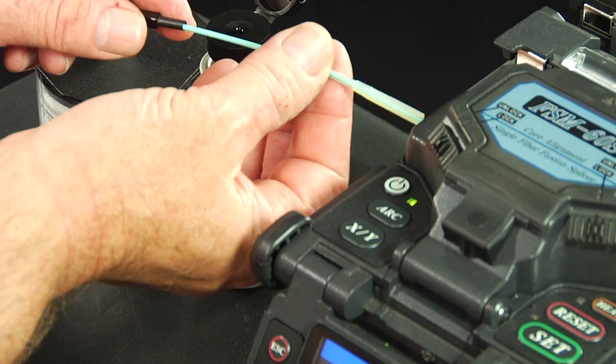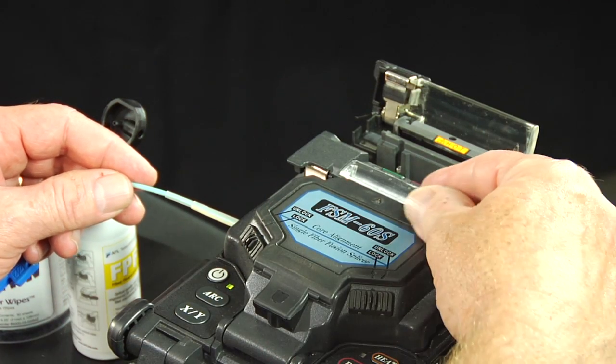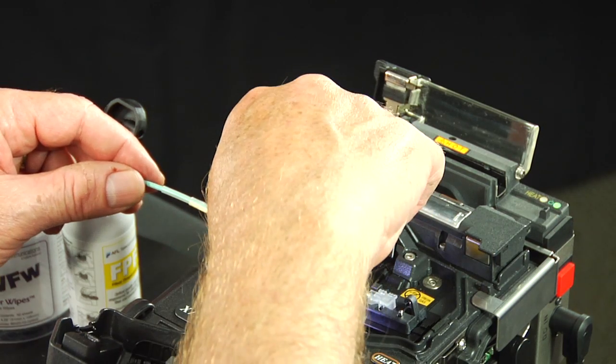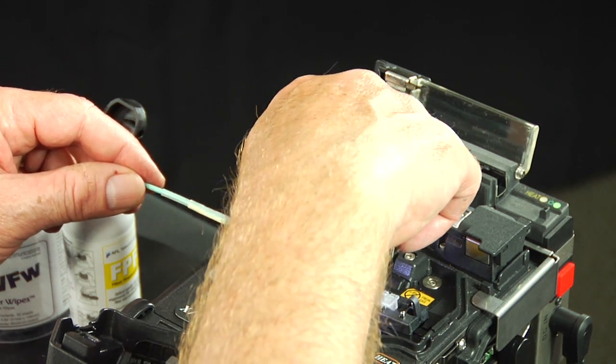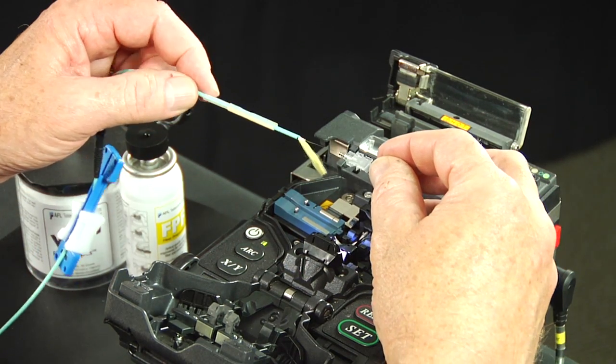Slide the protective sleeve toward the fiber holder. Using the left hand grip the 2 millimeter cable firmly with the thumb. Use the right hand to open the fiber holder clamps. Pick up the connector body holder and slide protective sleeve onto connector body.